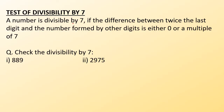To check if a number is divisible by 7, we find the difference between twice the last digit and the number formed by the other digits. If that difference is either 0 or a multiple of 7, then the number is also divisible by 7. So let's check the divisibility of 7 in the given numbers.